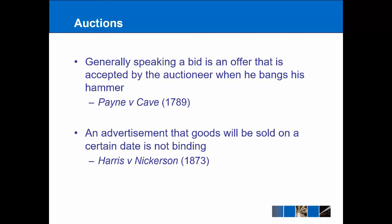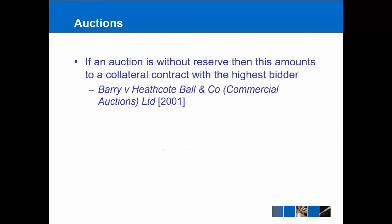However, there is a particular exception with auctions worth bearing in mind: items sold without reserve. A reserve can be placed on an item — for example, a Monet painting worth millions might have a reserve set to ensure it isn't sold for a tiny fraction of its value if only a couple of bidders are present. The reserve means the top bid is only accepted if it exceeds that threshold, say £2 million.